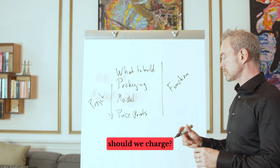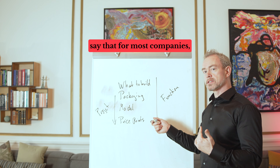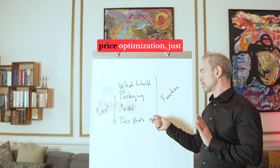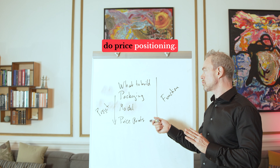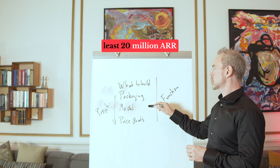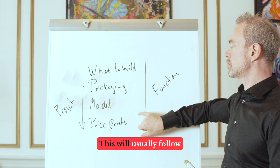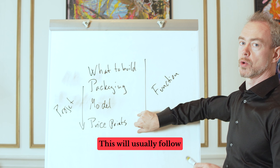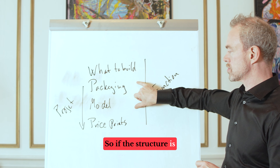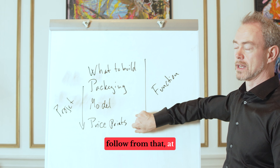From the pricing work, you get a feedback loop into the product level. As a pricing function, if you're doing this on an ongoing basis, you should be able to answer: what should we build, how should we package, what pricing model should we use, and how much should we charge? For most companies, don't worry about price optimization — just do price positioning. Until you're at at least $20M ARR, focus on getting this structure right.